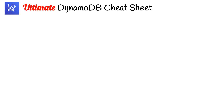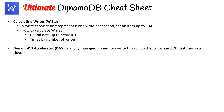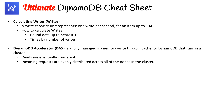On the last page of the ultimate DynamoDB cheat sheet: for calculating writes, a Write Capacity Unit represents one write per second for an item up to 1 kilobyte. To calculate WCUs: round data up to the nearest 1, then multiply by the number of writes. Now let's talk about DynamoDB Accelerator, also known as DAX — it's a fully managed, in-memory write-through cache for DynamoDB that runs in a cluster.